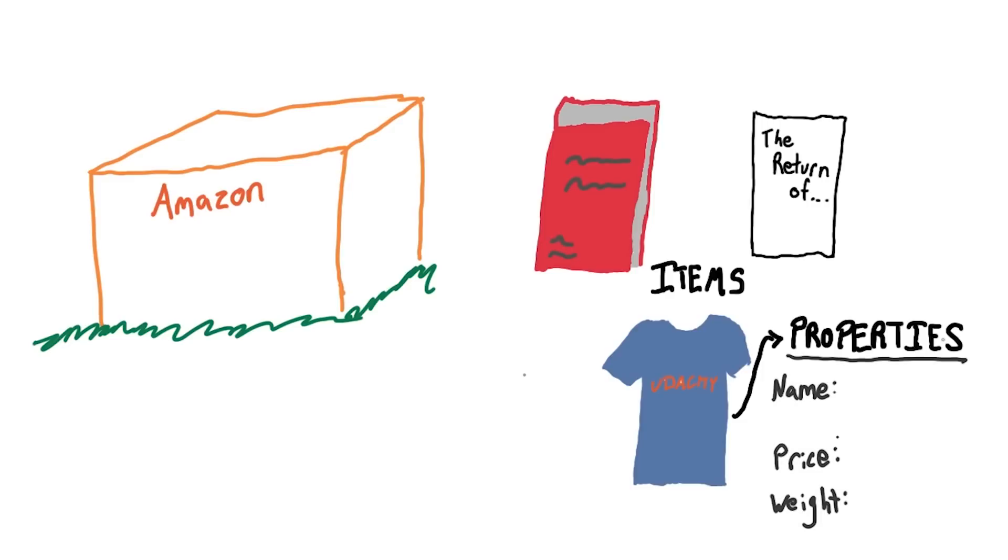Each item has some properties like a name, a price, and a weight. For example, a Udacity t-shirt costs $15 and weighs 6 ounces.